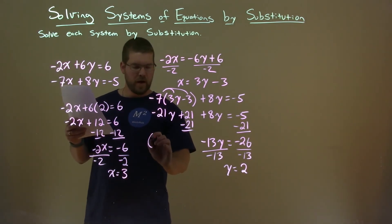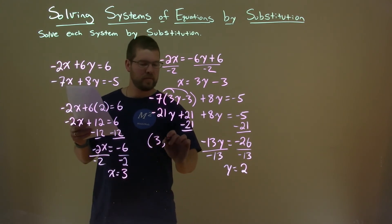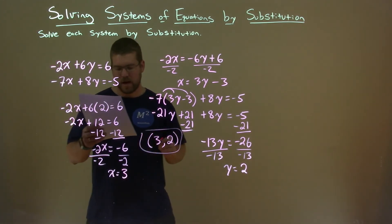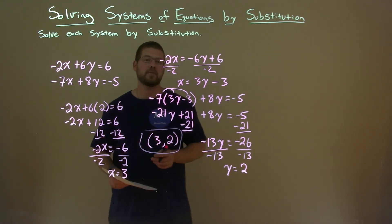So our value for x is 3, y value is 2. And we're given the coordinate point now, 3 comma 2. And that is our final answer.